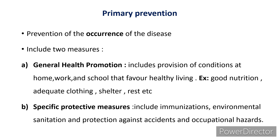The first measure of primary prevention is general health promotion, where we focus on everything from a broad view — for example, providing conditions at home, work, and school that favor healthy living, such as good nutrition, adequate clothing, shelter, and rest. The second measure is specific protective measures, where we are more targeted — for example, immunizations, environmental sanitation, and protection against accidents and occupational hazards.